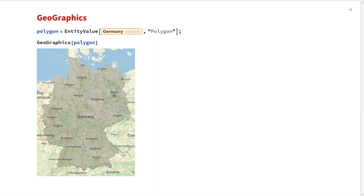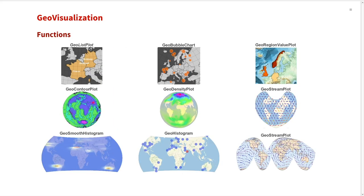As long as we want to do something simple like this, it's not a problem to use GeoGraphics. But once we want to plot more information and layer more data on top of these graphics, it can get complicated quite quickly. To deal with that, we have a suite of geovisualization functions that are built on top of the GeoGraphics functionality, also leveraging the different data plots that we have.